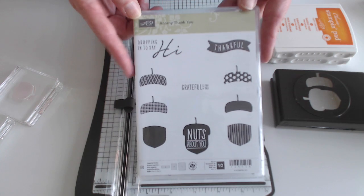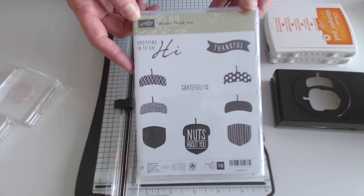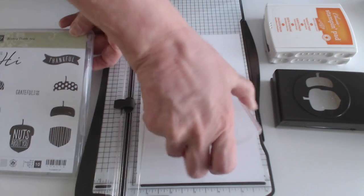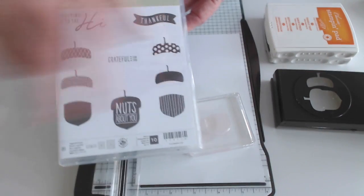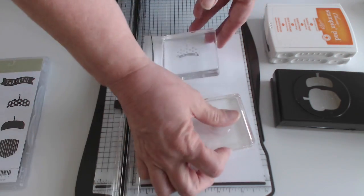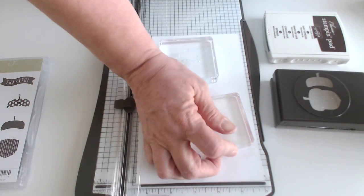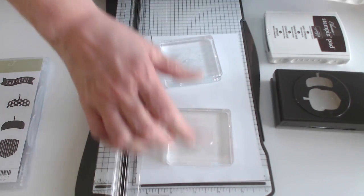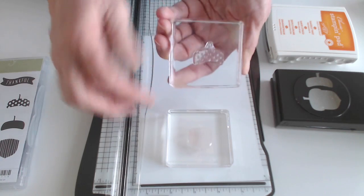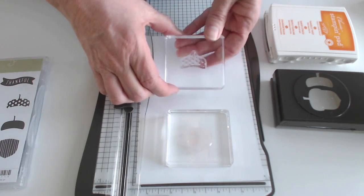The stamp set I'm using is from Stampin Up called A Corny Thank You, and I am using this one right here. For the top I'm using the polka dot one. I'm going to use the early espresso stamping pad for my ink on the bottom and tangelo twist for my ink on the top.